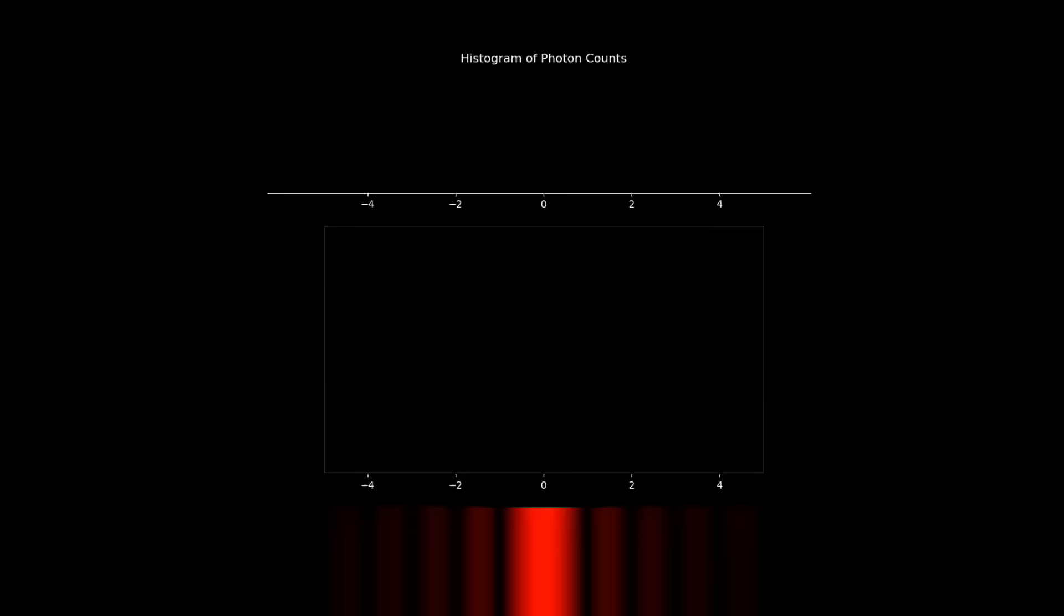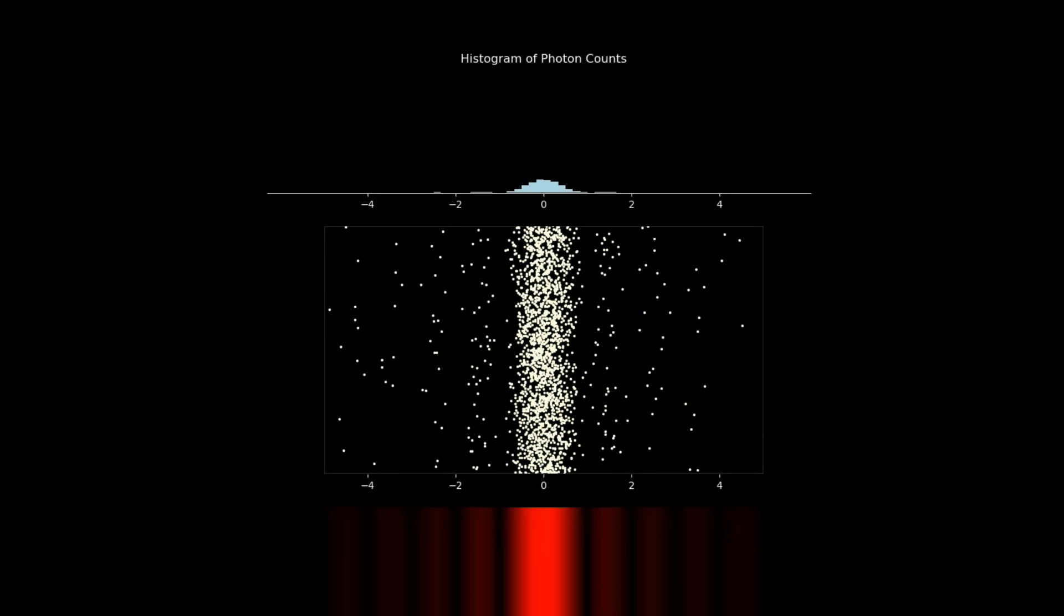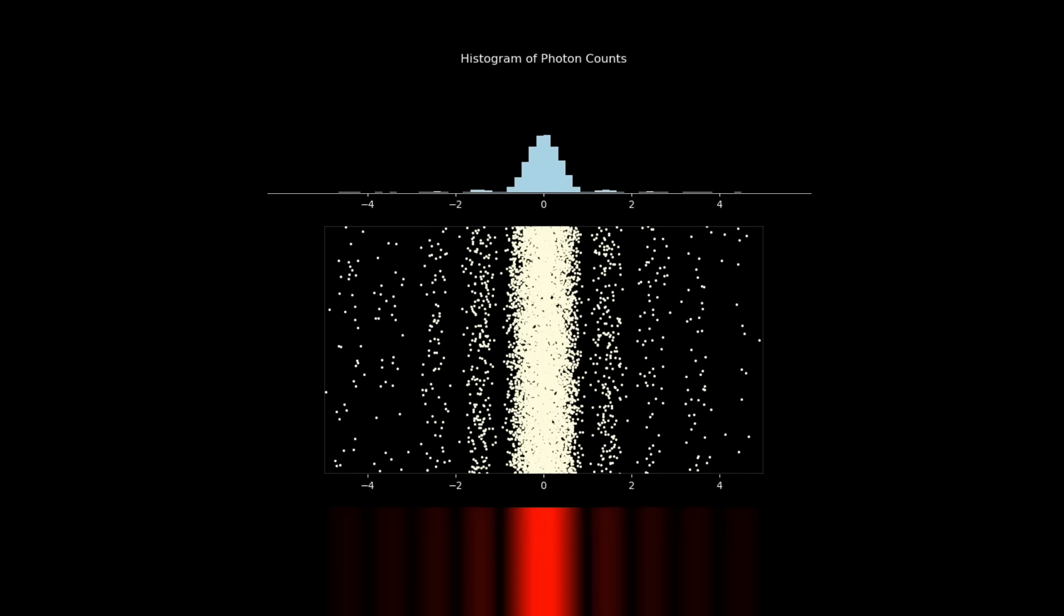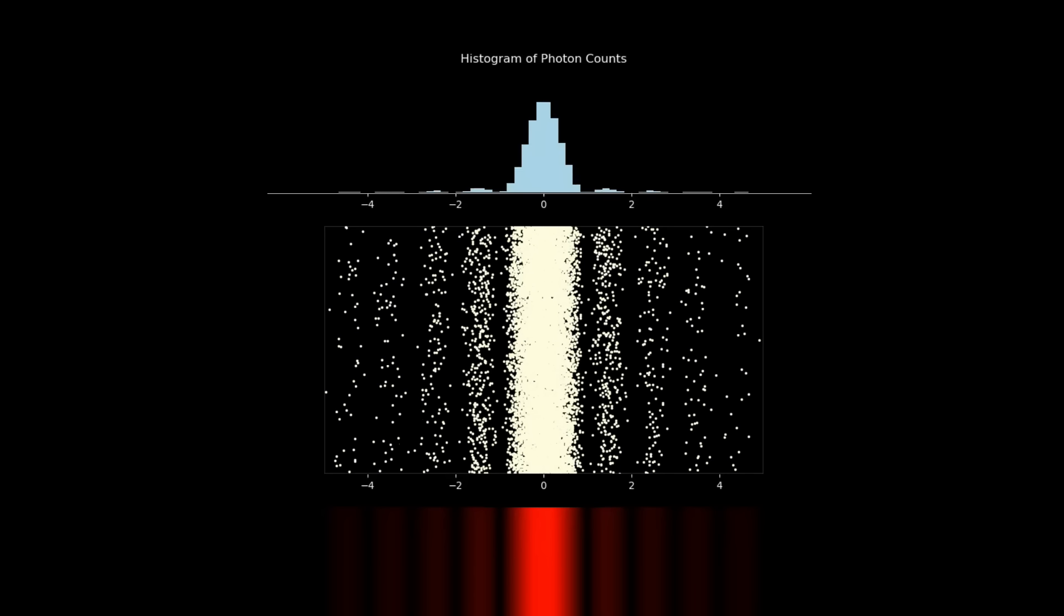Now imagine we turn the laser intensity right down, firing just one photon at a time through the gap, and recording where each photon ends up landing on the screen. And imagine that we represent each location with a dot. If we do this, we see that a pattern begins to slowly emerge, and that this pattern matches the light and dark fringes that we observe with a full intensity beam. And if we now imagine counting how many photons are detected within certain intervals across the screen, and we record this data as a histogram, then we see that the histogram distribution of counts matches the intensity pattern of the light.